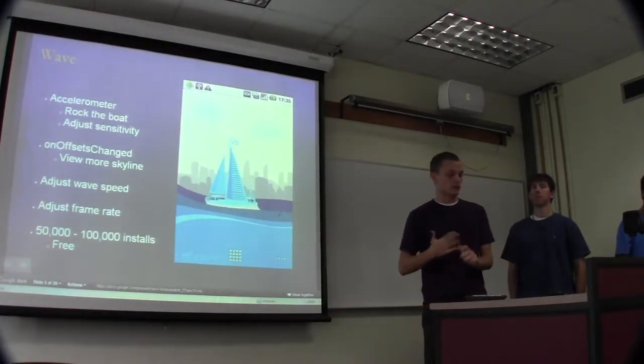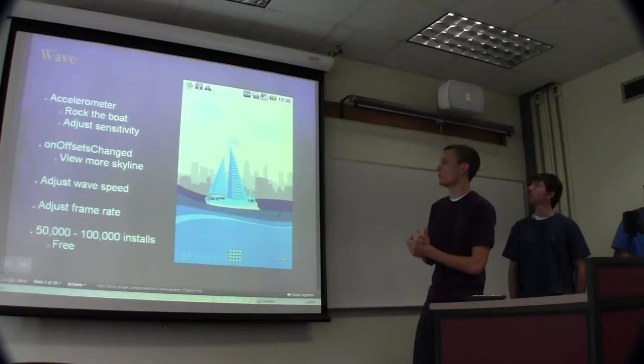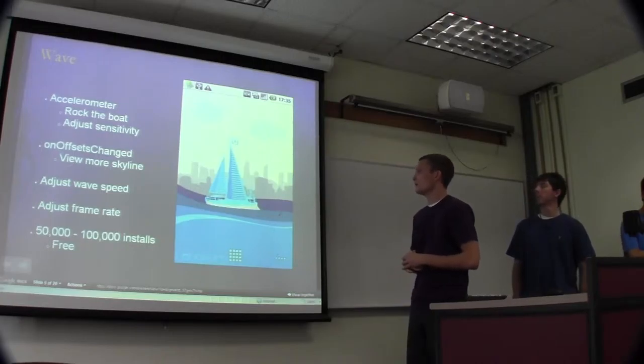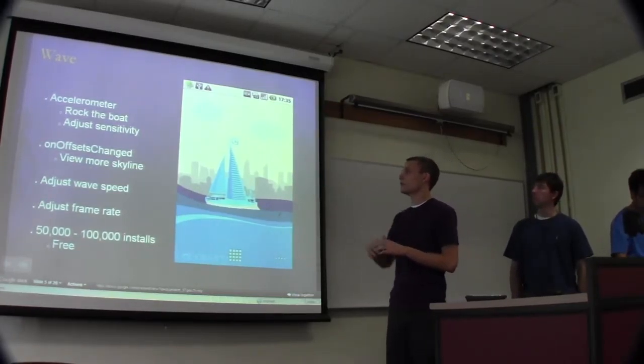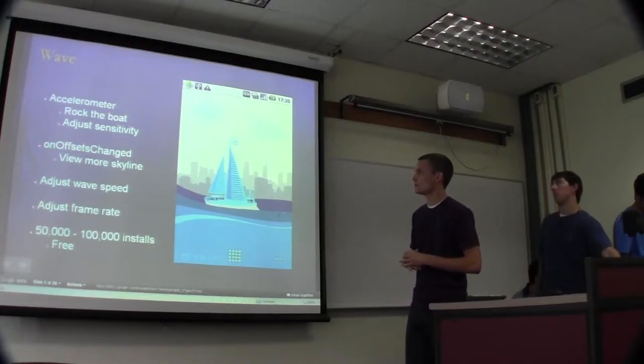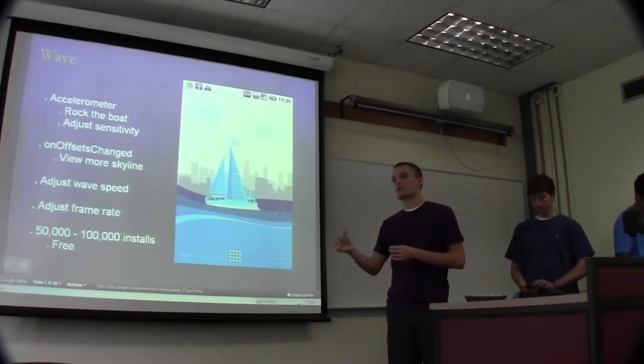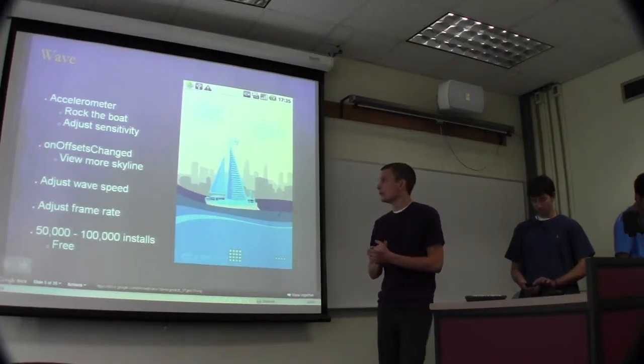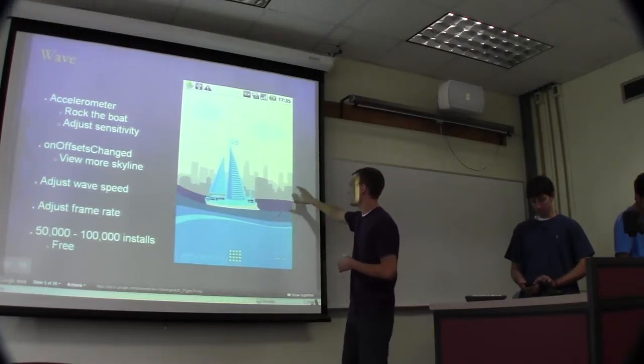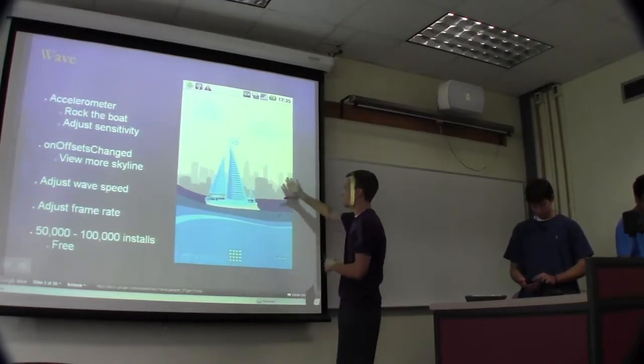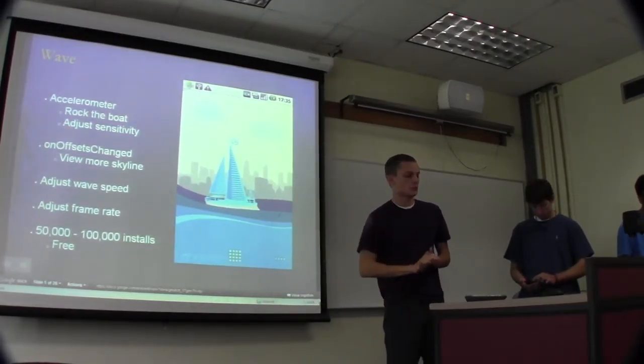So our next example is this wave live wallpaper. It uses the accelerometer to rock the boat, so as you move your phone back and forth the boat goes side to side. On offsets change is a new method that we'll talk about that this wallpaper implements. Basically on offsets change is when you swipe the screen. And here when you swipe the screen you can see this skyline in the background and it actually moves over to the side so you can see more of the skyline when you swipe the screen.